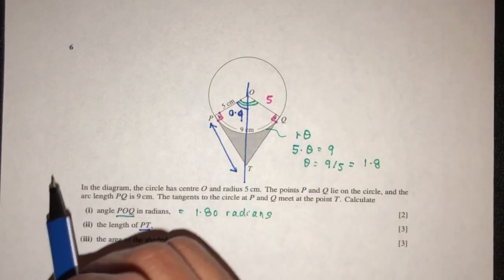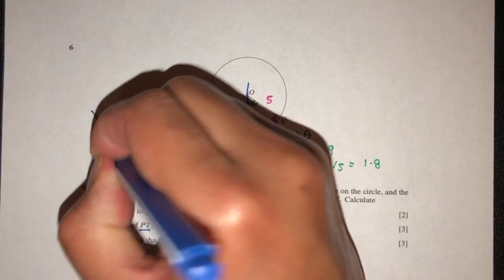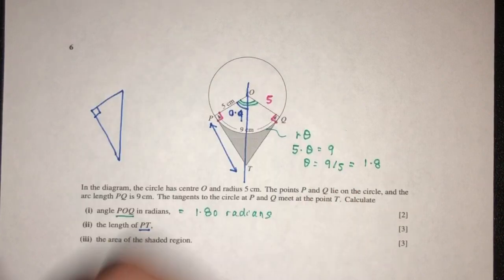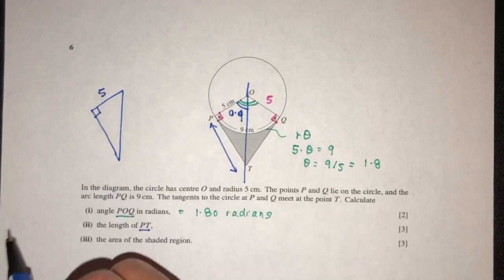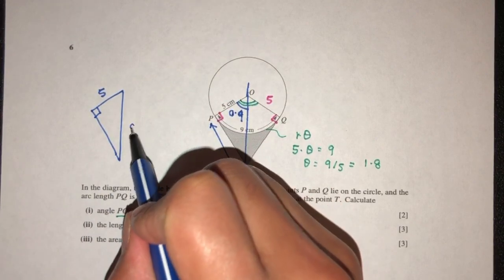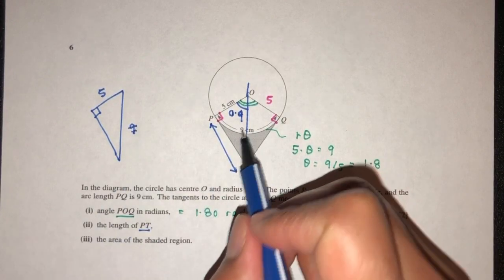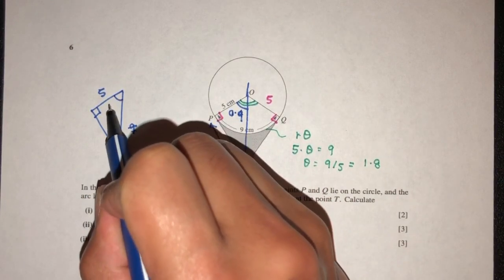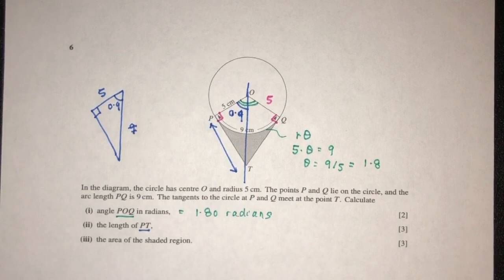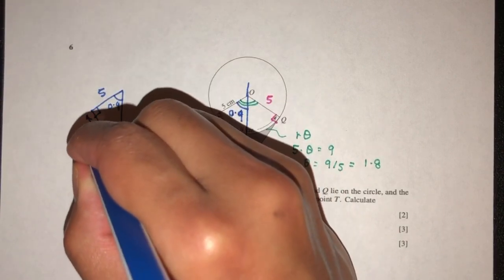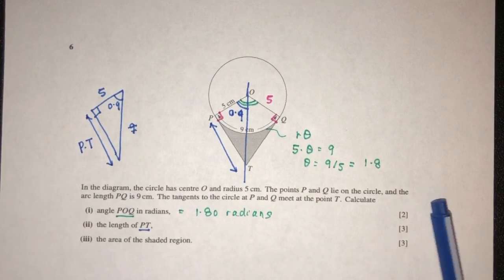Now we have a right-angled triangle. Here we have 5 for the radius. And we're trying to find the length of PT. We can use SOHCAHTOA. Let's see which one we'll use.